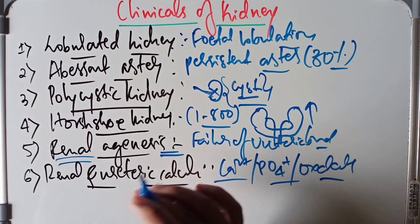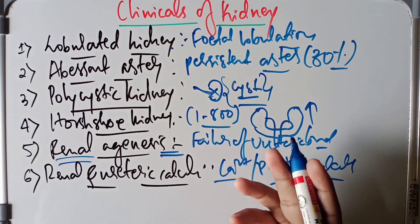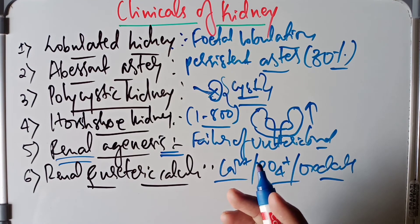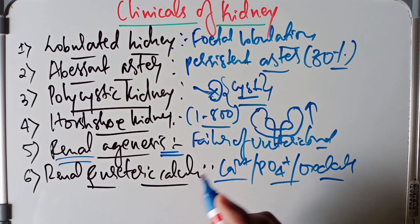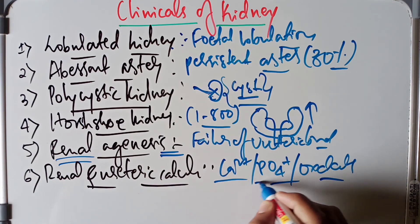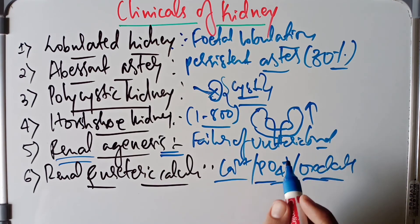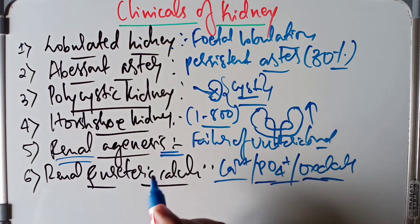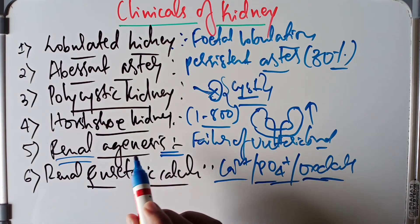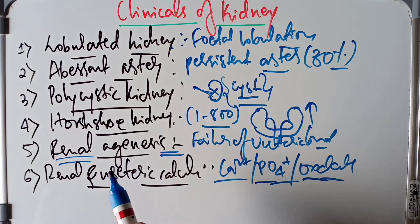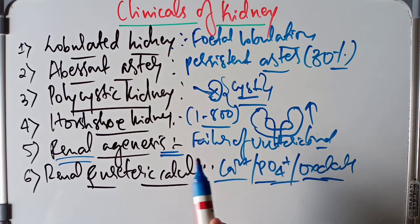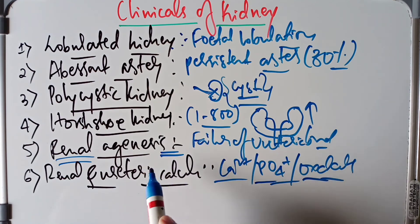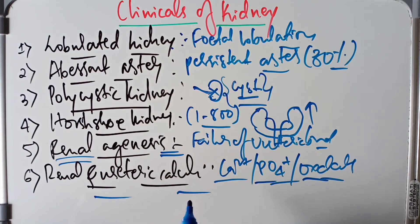When urine becomes saturated with these salts, small variations in pH cause the salts to precipitate and form stones. The stones may be located in the renal calyces, the ureter, or the urinary bladder. That covers the basics of renal and ureteric calculi.